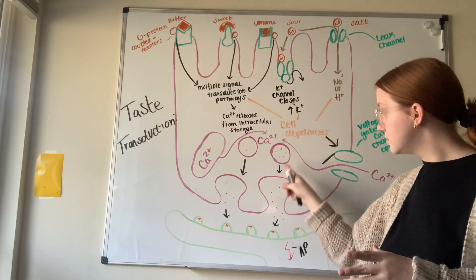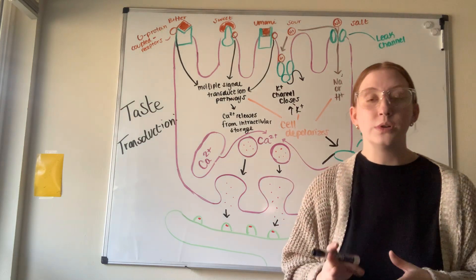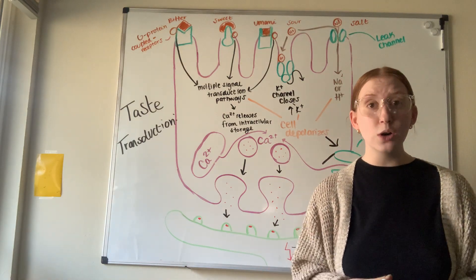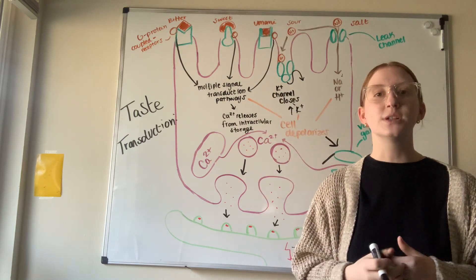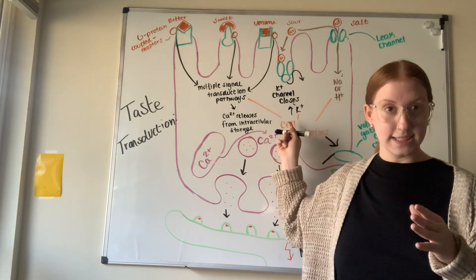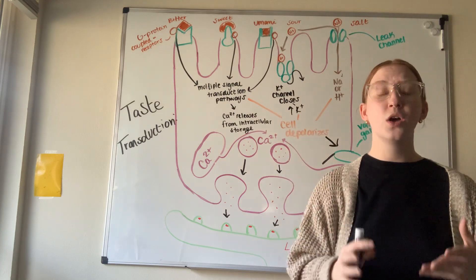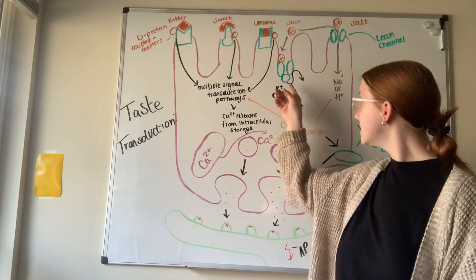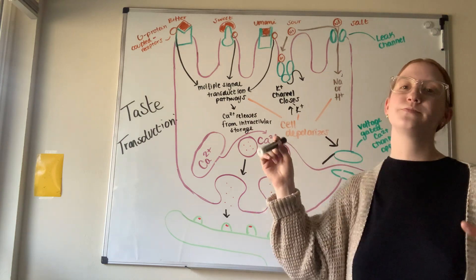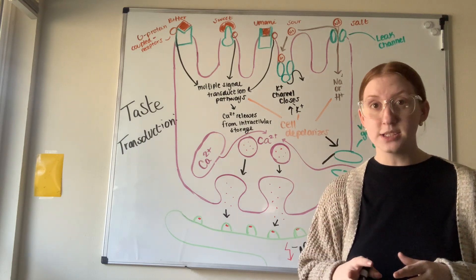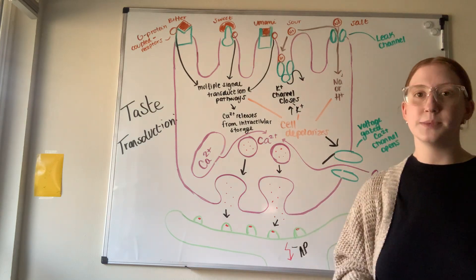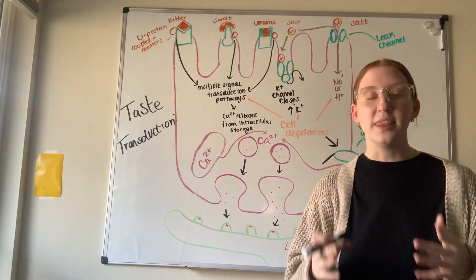Calcium will attach to the vesicle and neurotransmitters will be released, triggering action potentials. If the acid is attached to receptors that close potassium channels, the potassium will continue to leak out but potassium levels will increase inside the cell. When the potassium channels are closed, the inside becomes more positive, the cell depolarizes, voltage-gated calcium channels open, calcium comes in, and the vesicle releases neurotransmitters.